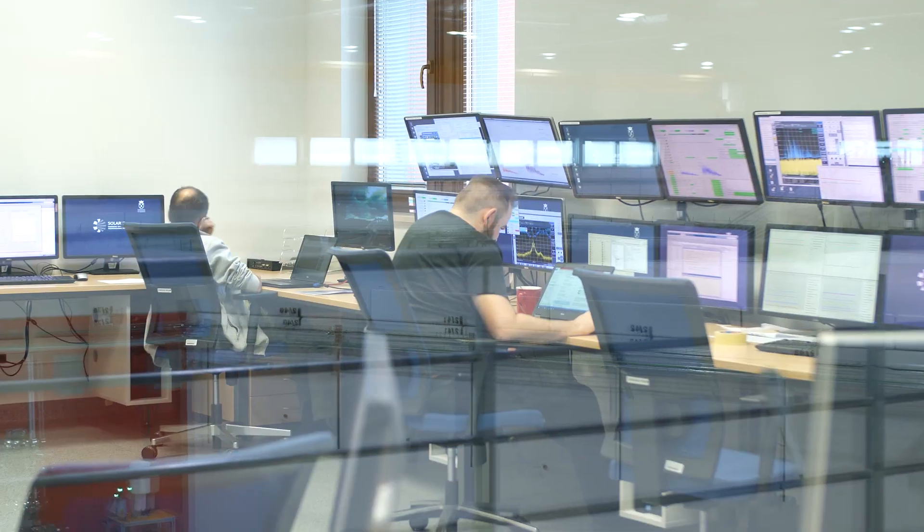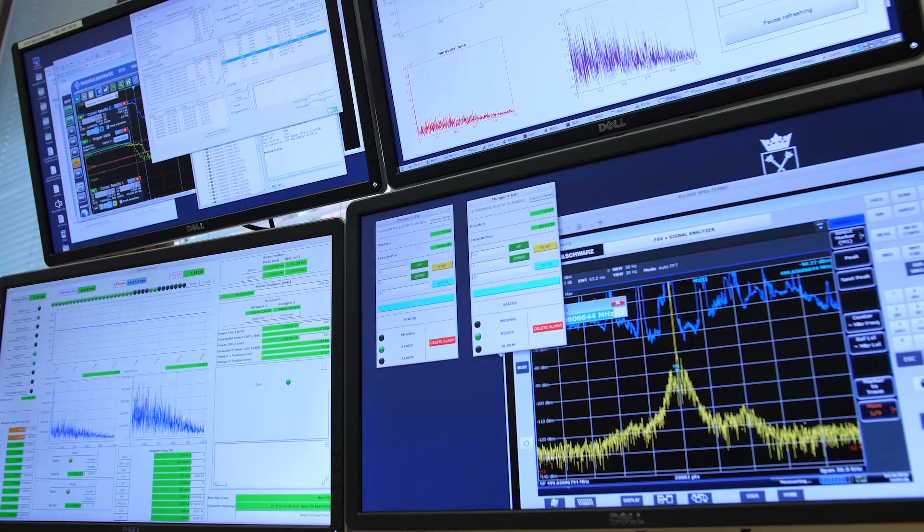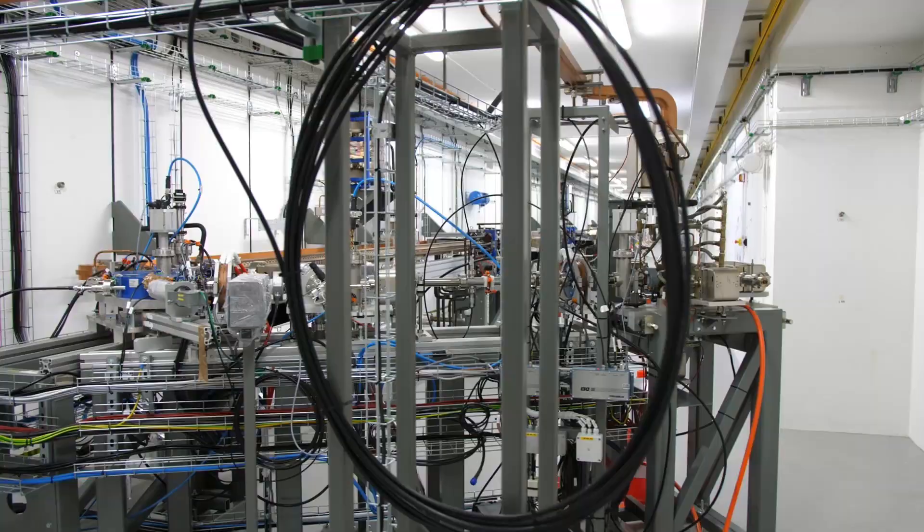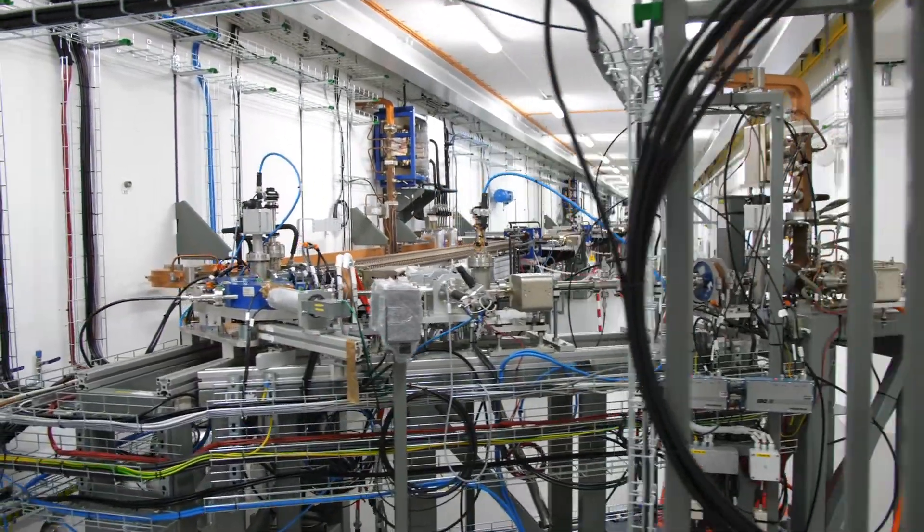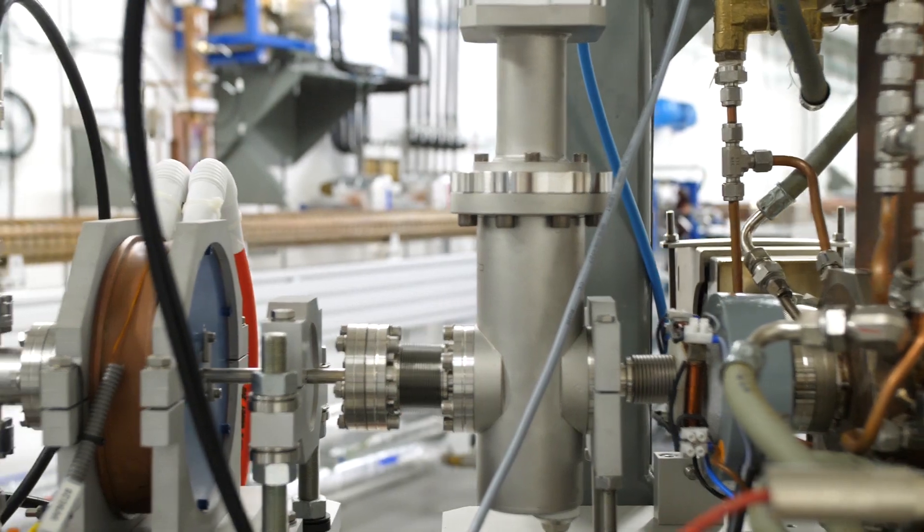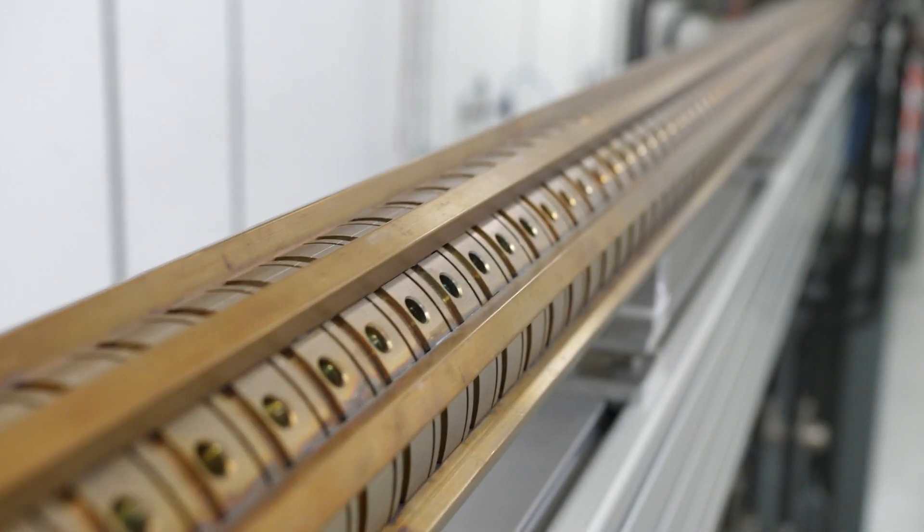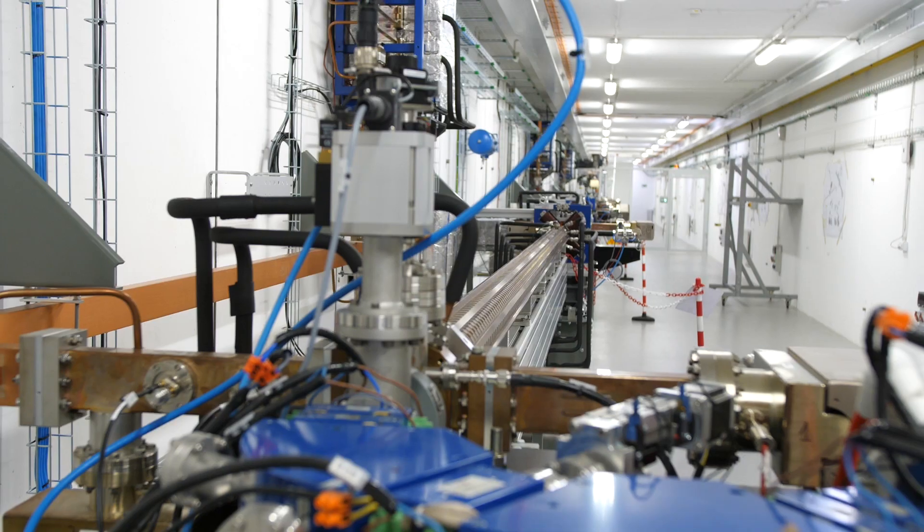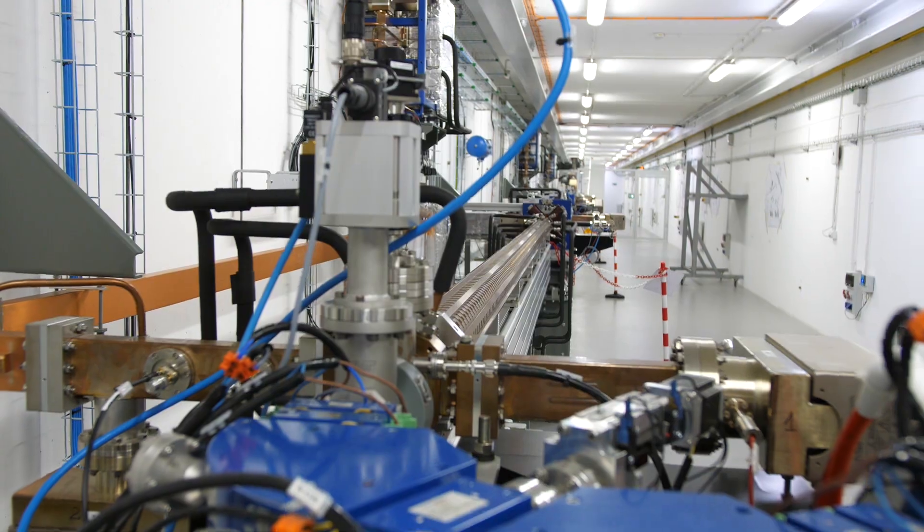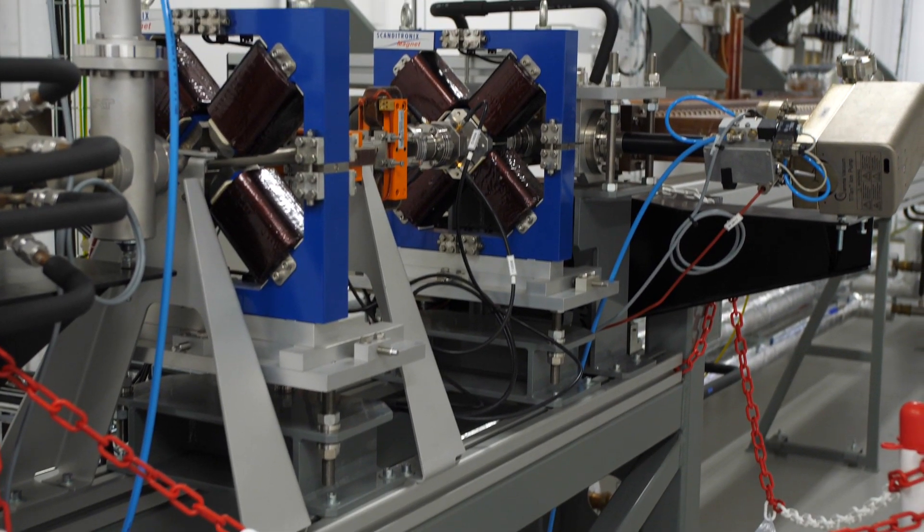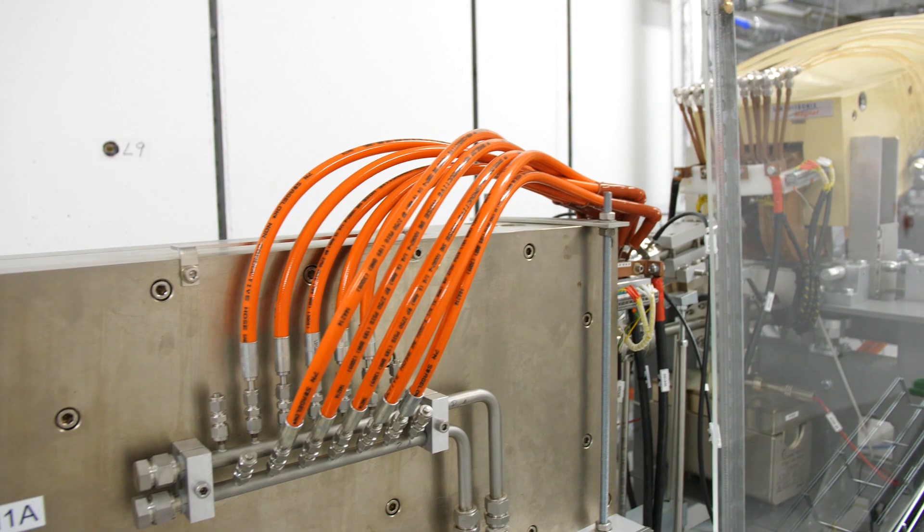Free electrons are needed to create the synchrotron radiation which can be used in research. The electron gun produces them, and then electrons are accelerated in a linear accelerator to an incredible speed which is close to the speed of light in vacuum. In one second they can travel nearly 300,000 kilometers, a distance between the Sun and the Moon.